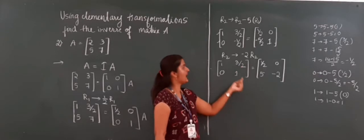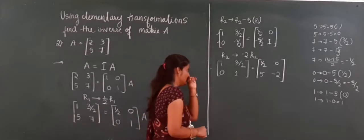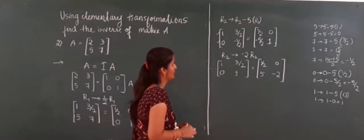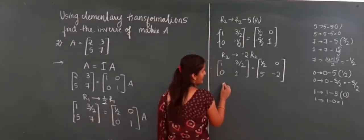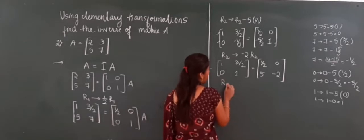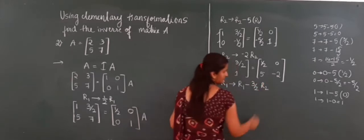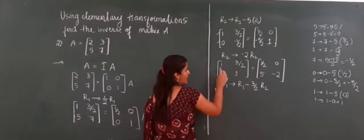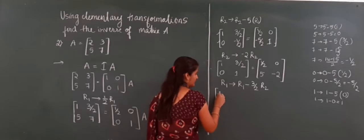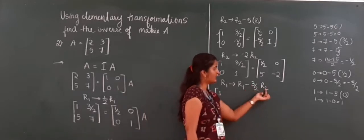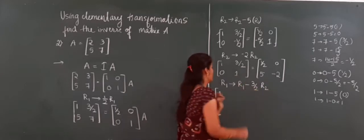Now we have 1, 0 and 1 on the diagonal, but the (1,2) element is 3/2 and I have to make it zero. So R1 changes to R1 minus (3/2)×R2. We get: 1 minus (3/2)×0 = 1, and 3/2 minus (3/2)×1 = 0. R2 does not change.